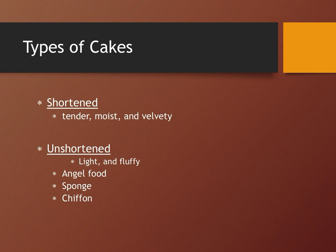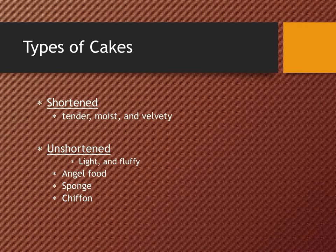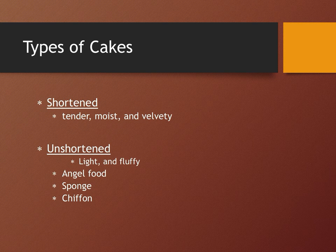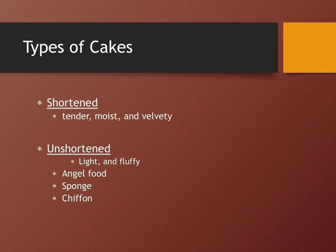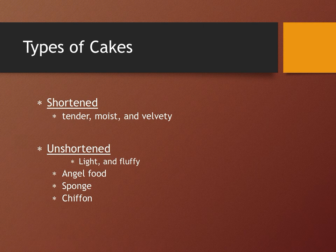While talking about the types of cakes, there are two types: one is shortened and the other is unshortened. Shortened cakes are sometimes called butter cakes, and unshortened cakes are sometimes called foam cakes. Shortened cakes have butter or fat content in them, but on the contrary, unshortened cakes do not contain any fat. Shortened cakes are tender, moist and velvety in texture, while unshortened cakes are light and very fluffy. Examples of unshortened cakes are angel food cake, sponge cake and chiffon cake.